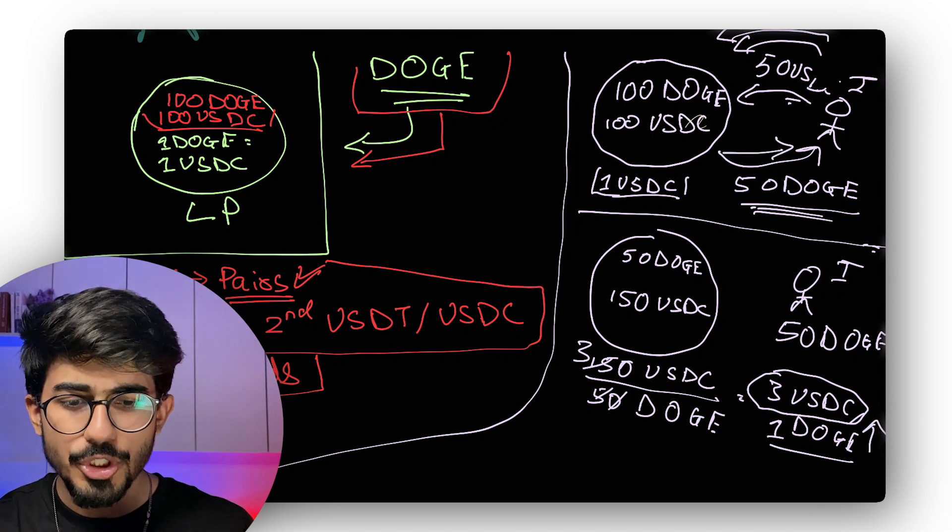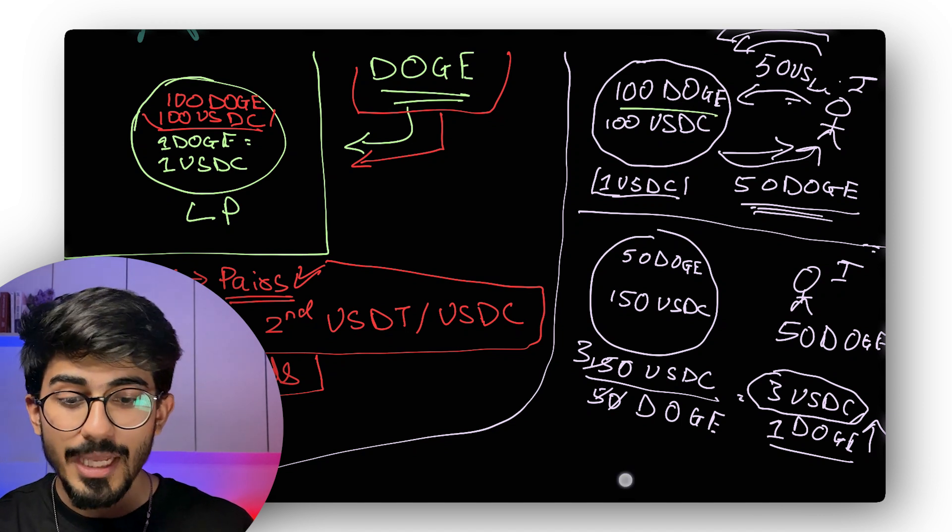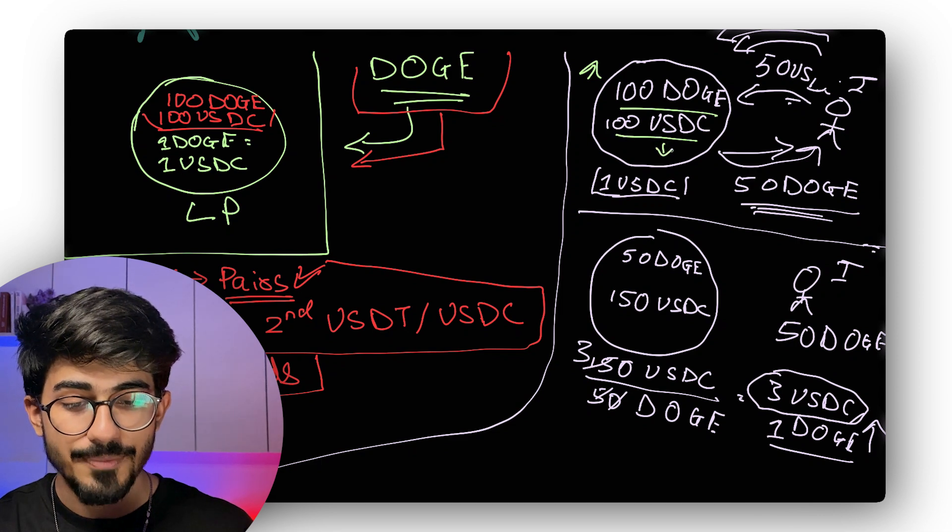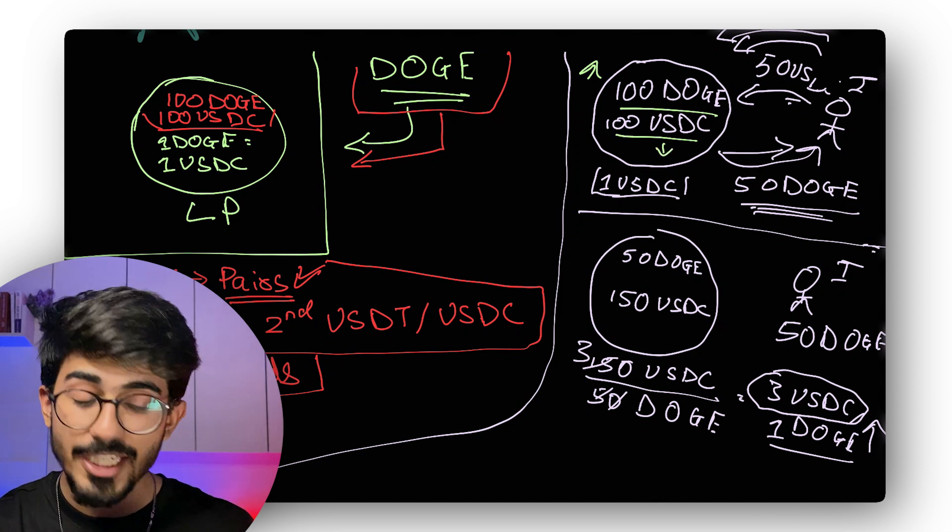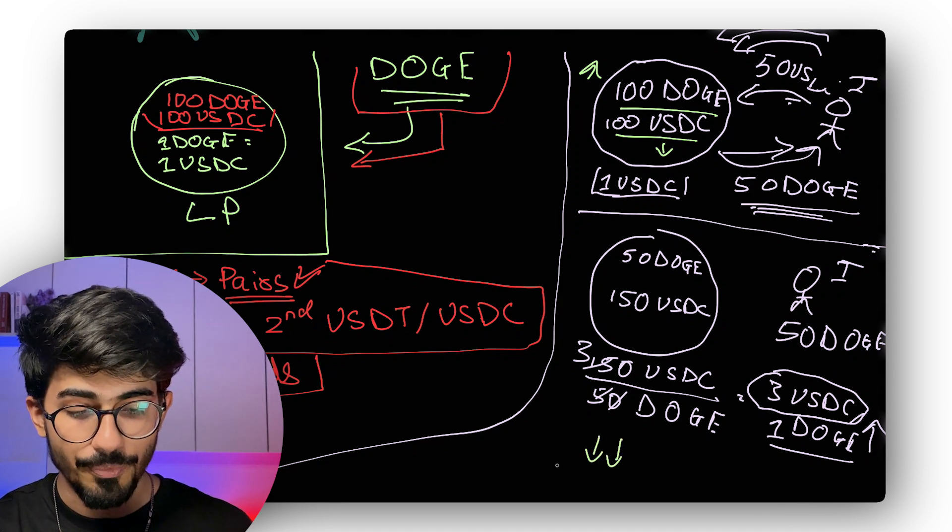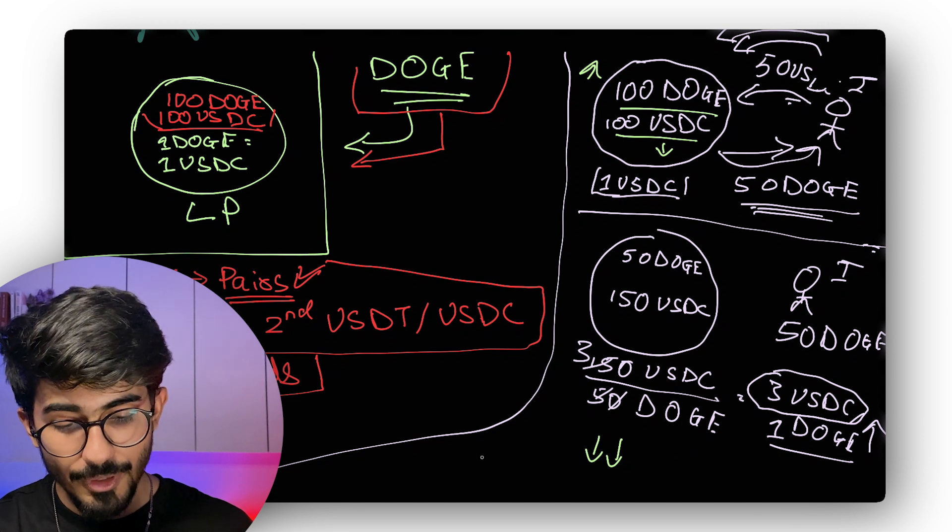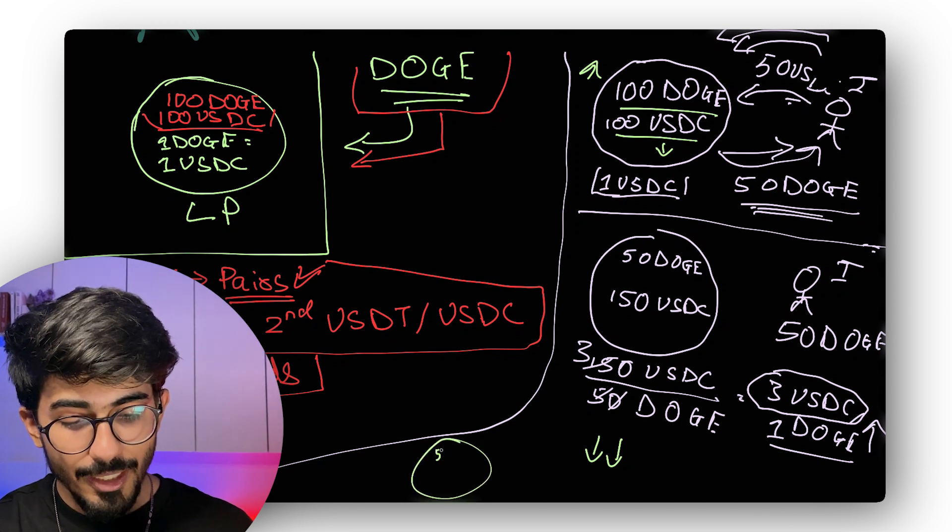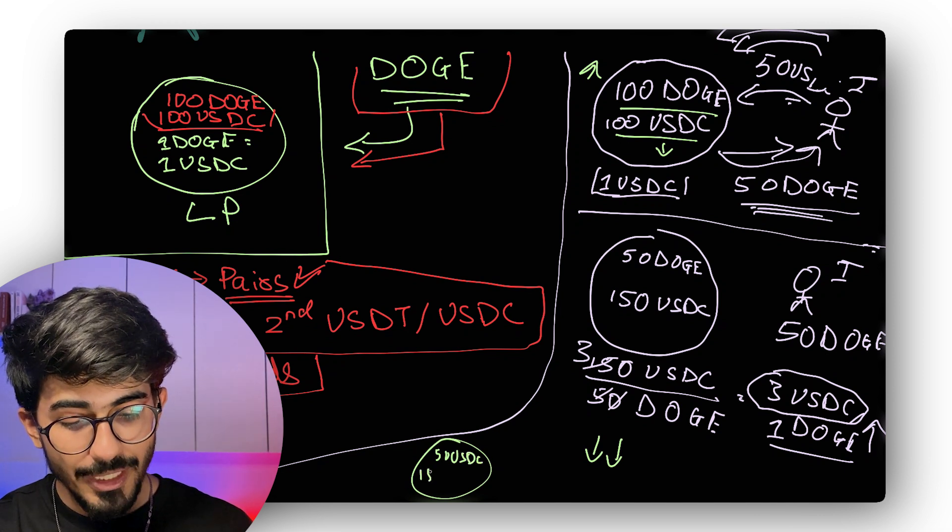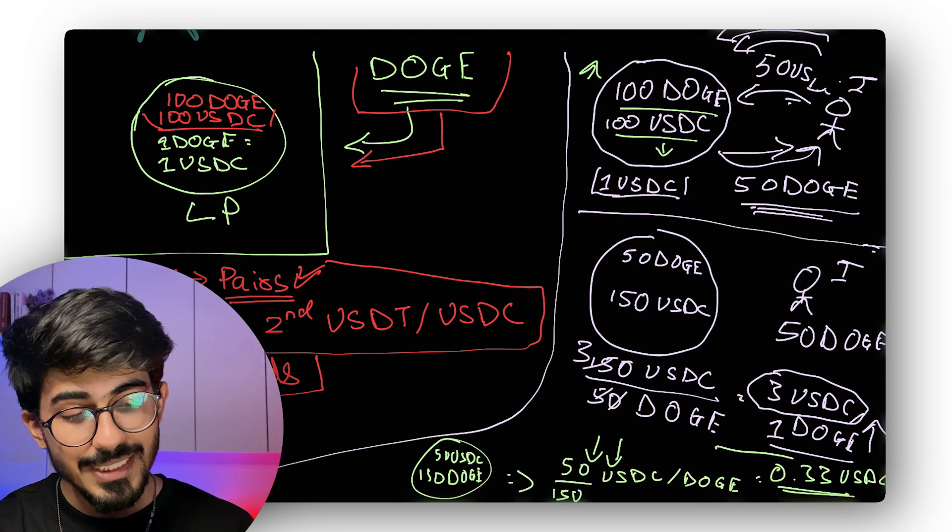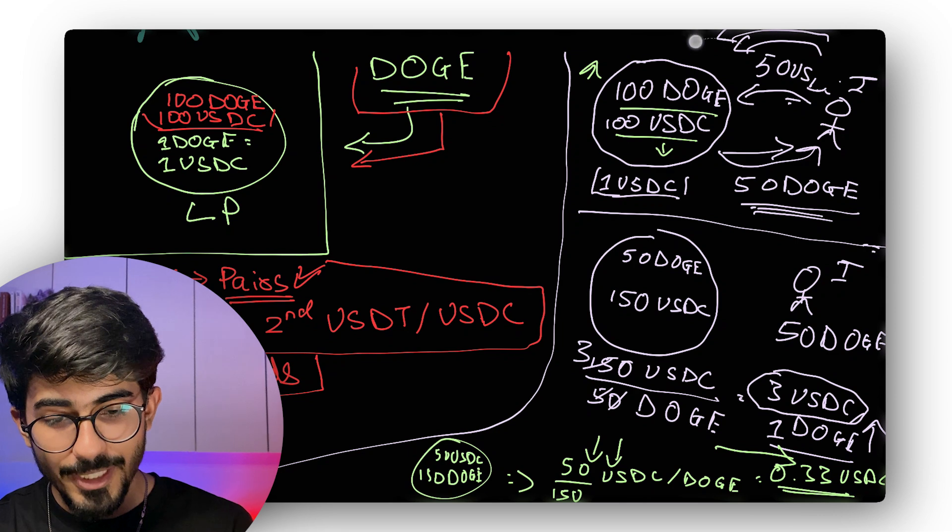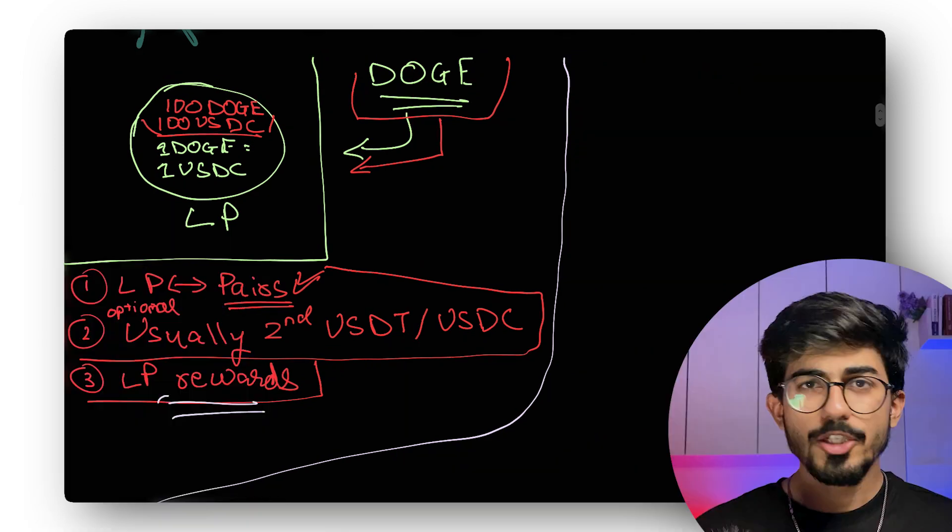If people start selling Doge coins, its value in the pool actually increases, and USDC's value decreases. So that's why the ratio if you take, Doge coin's value will actually start going down. Say for example, if in the liquidity pool, you just have 50 USDC and you have 150 Doge coins now when people start selling Doge coins. So it's getting a bit crowded. Let me just remove all of these things.